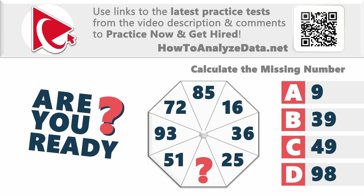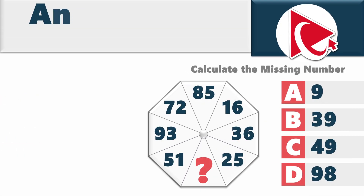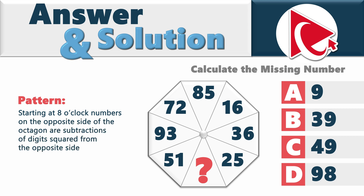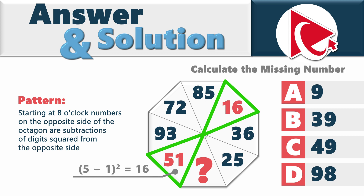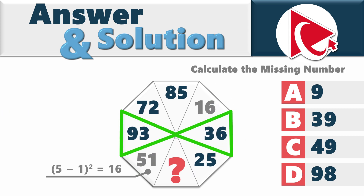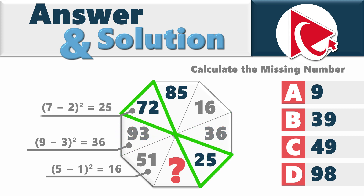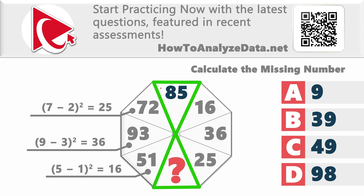Time's up. The pattern is that numbers on opposite sides of the octagon relate by squaring the difference of their digits. At 8 o'clock is 51; at 2 o'clock is 16: (5 − 1)² = 16. Confirming: (9 − 3)² = 36, and (7 − 2)² = 25. So the missing number is (8 − 5)² = 3² = 9. The correct answer is choice A — 9.